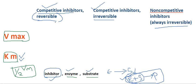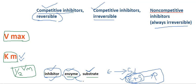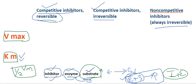In reversible competitive inhibition, the inhibitor has a similar structure to that of the substrate and easily binds to the enzyme, therefore not allowing the enzyme to act on the substrate — this step is inhibited. But if we increase the substrate concentration, we can reverse this inhibitor-enzyme complex. This is called reversible competitive inhibition.